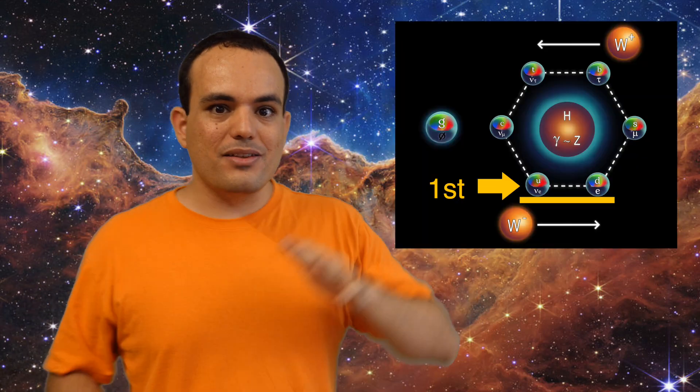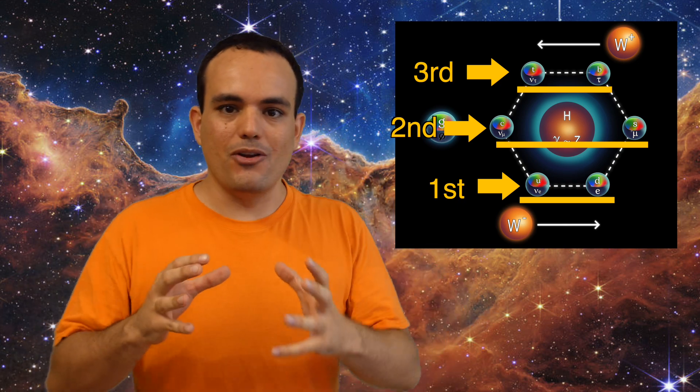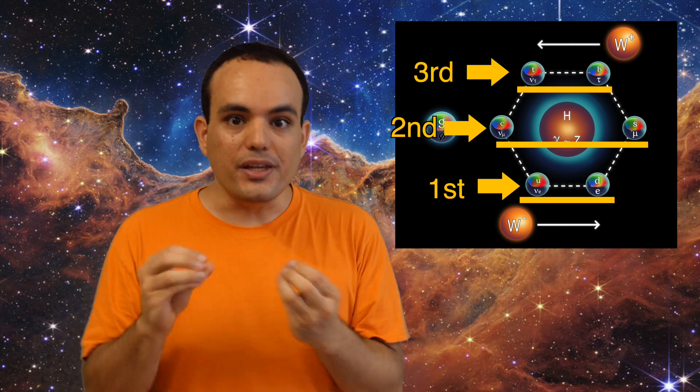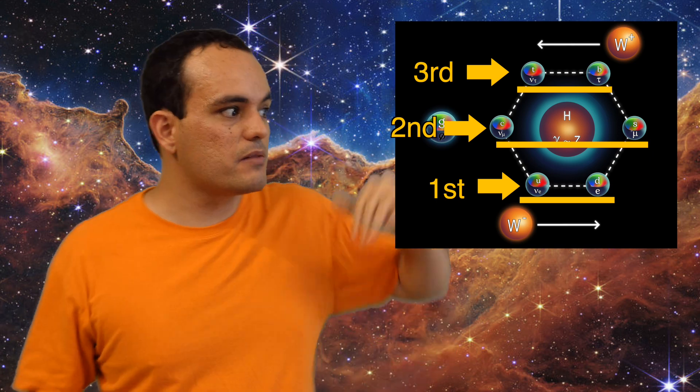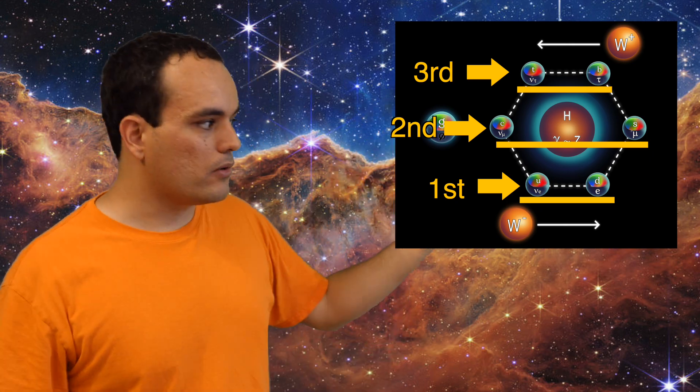Okay, that was the first level of the hexagon, but don't worry, the other levels are just more of the same. Because for some reason, nature allows for the existence of three versions of each kind of particle. And the only difference is that each one just has more mass than the previous one. We call this the three generations of particles.